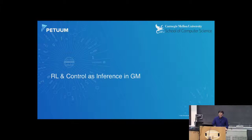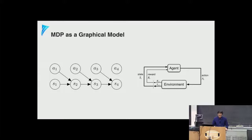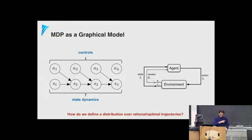If we have an MDP, we can represent it as a graphical model. The graphical model describes the Markovian dynamics — treating states and actions as random variables with the corresponding dependencies. The problem is: how do we define a distribution not just over any trajectory, but over optimal or rational trajectories? The notion of optimality in RL is captured by the reward, so we need to incorporate the reward into the graphical model, ideally as a single model over which we can do learning and inference.